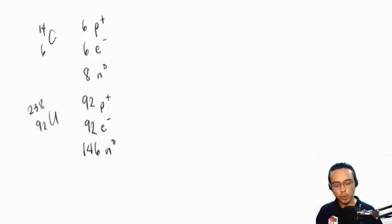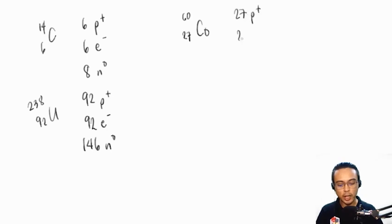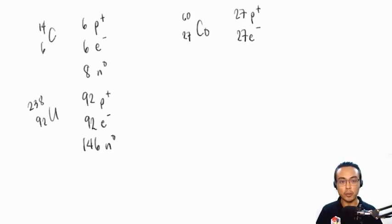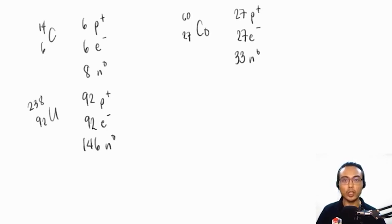For cobalt-60, the atomic number is 27, meaning it has 27 protons and 27 electrons. For neutrons, we subtract 27 from 60, giving us 33 neutrons. Do not forget this method, as it will be important for all calculations — from balancing nuclear equations to determining the stability of isotopes.